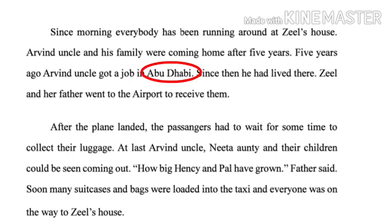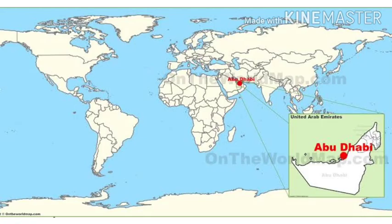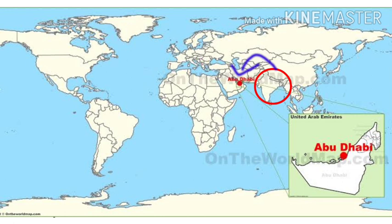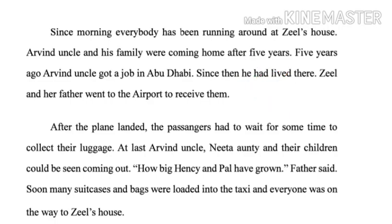What is Abu Dhabi? Abu Dhabi is the capital city of United Arab Emirates — UAE. Here, see the map. This is the world map. Here we can see our lovely India, and to the west of India you can see UAE, United Arab Emirates, and Abu Dhabi city. This is where Abu Dhabi is located.